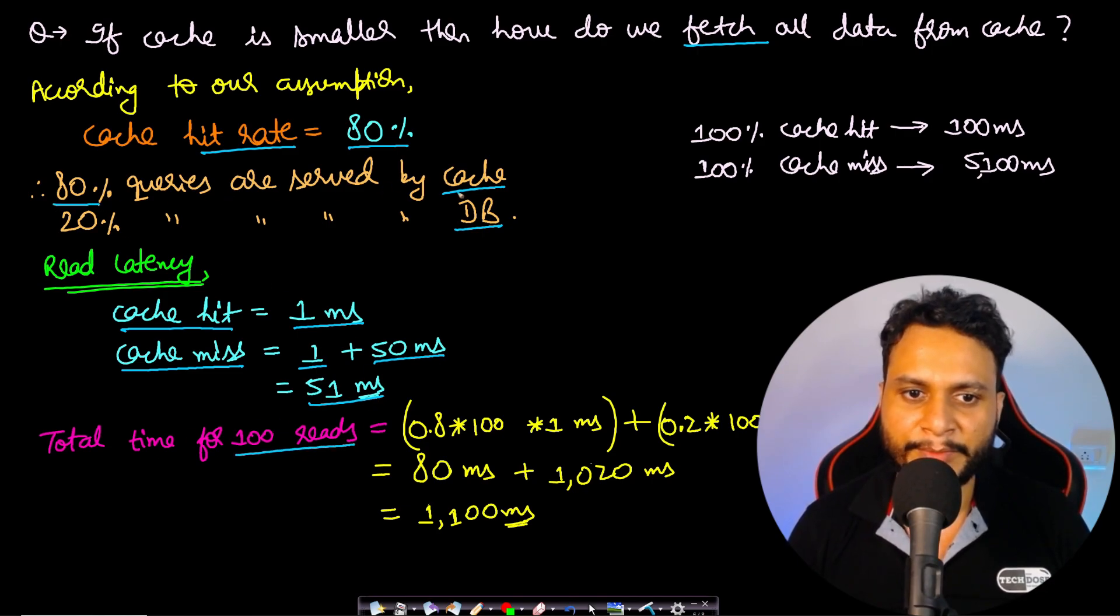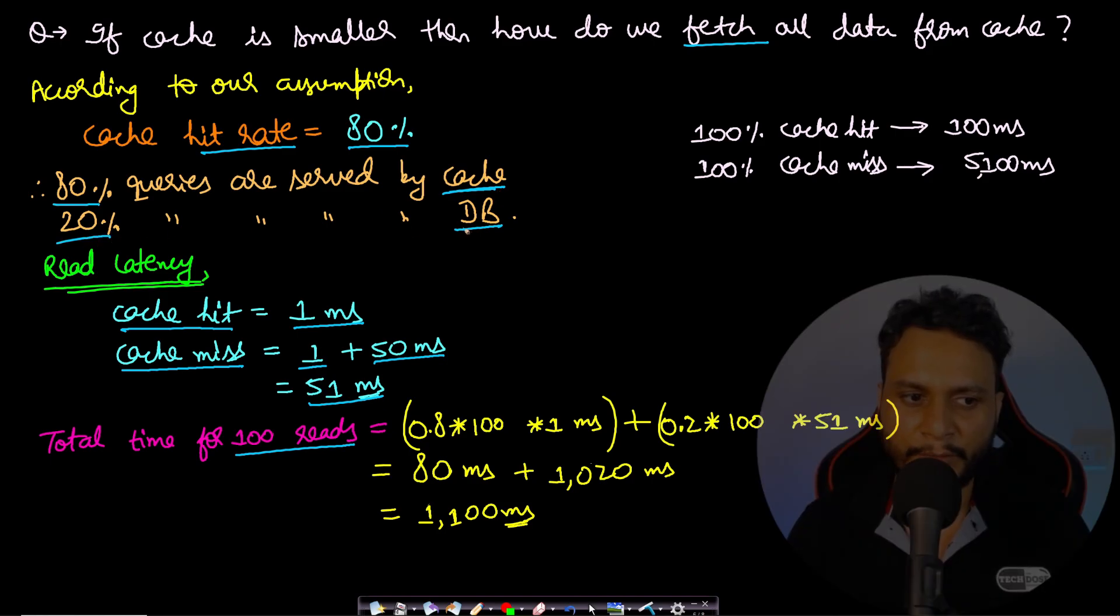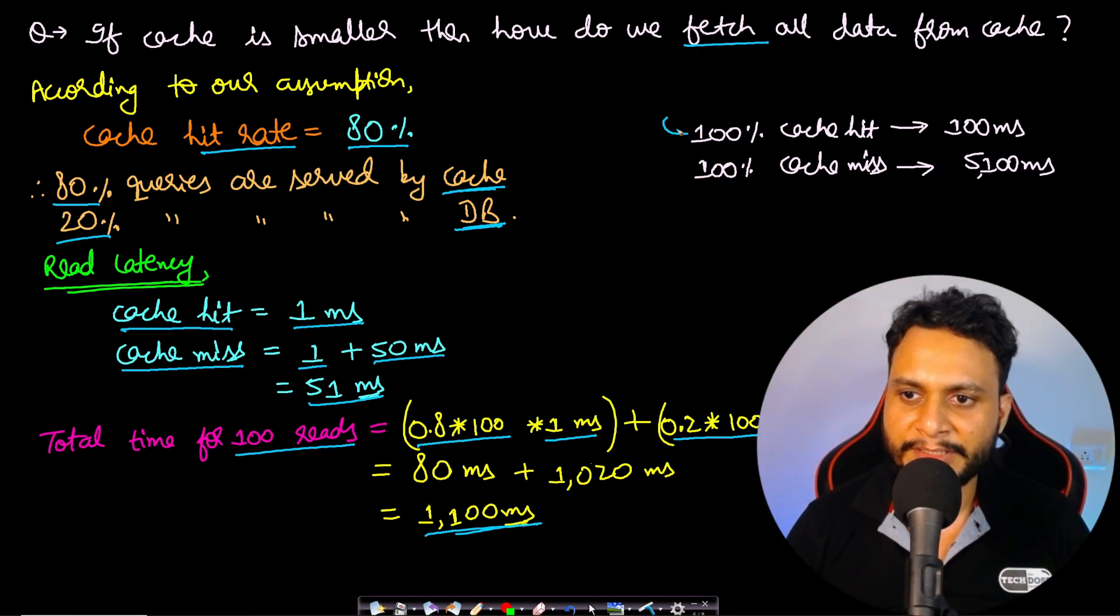Therefore, the total time for 100 reads, considering 80% of the queries are served by cache and 20% by the DB, is 80% of 100 queries times 1 ms plus 20% of 100 queries times 51 ms, and that adds up to 1100 ms in total. Now, if you compare this with 100% cache hit, what if all the queries were served by the cache and we never had to go to the database? In that scenario it would take 100 ms in total for 100 queries, that is 1 ms per query.